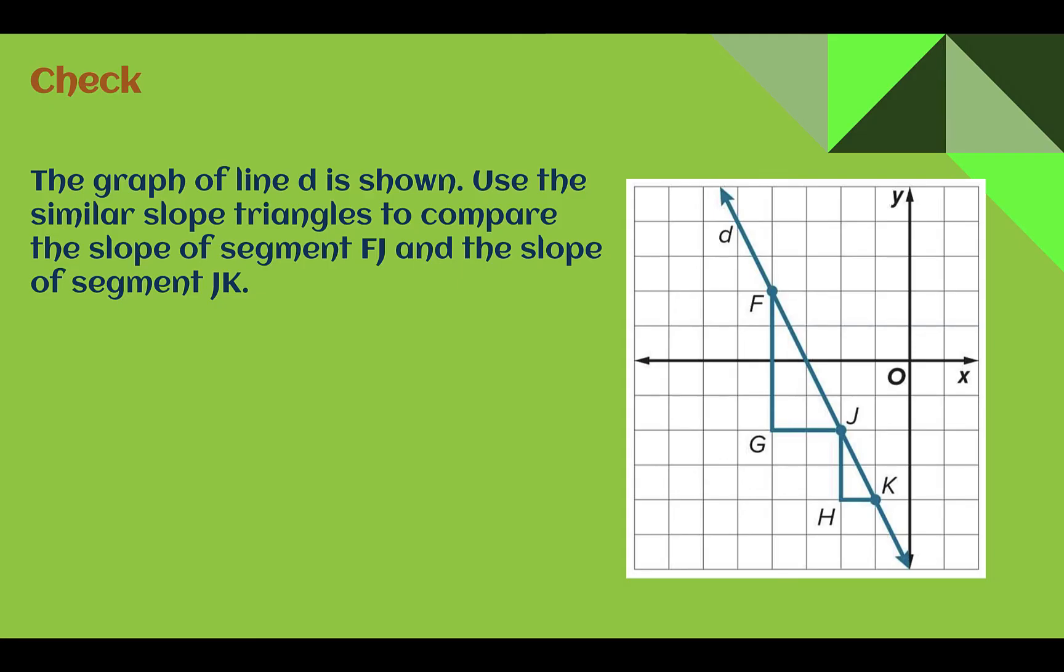Check your understanding. Similarly, the graph of line D is shown. Use the similar triangles to compare the slope of segment FJ to the slope of segment JK. Pause the video now and complete the check.